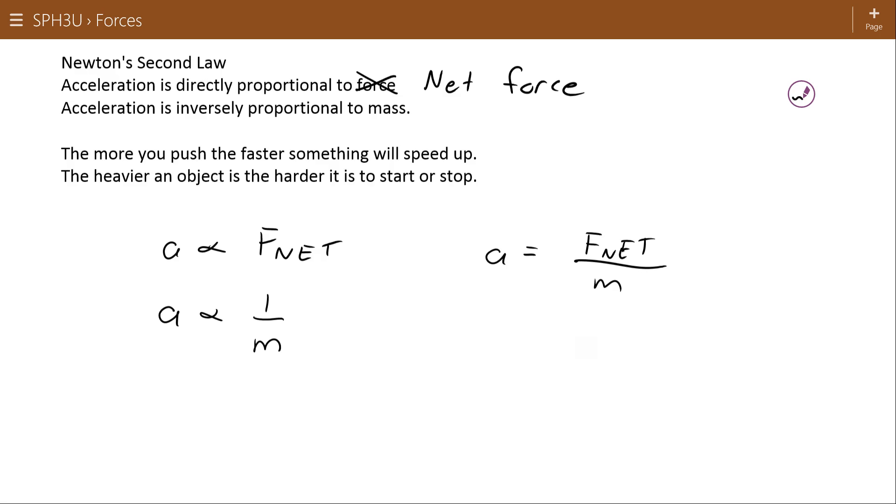What that means then is that F net equals ma. Newton made that the case so that one newton equals one kilogram times one meter per second squared, and so we don't need any constant or conversion factor to make this equation work.